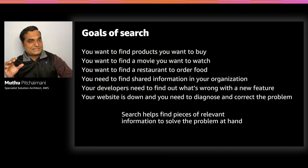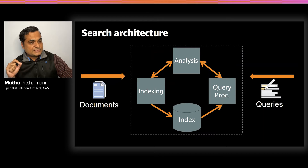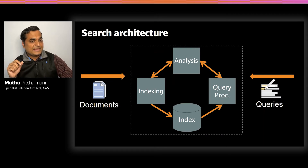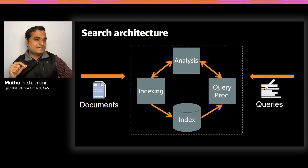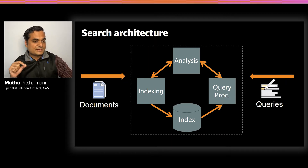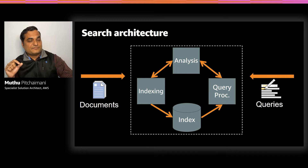Broadly, the architecture of Elasticsearch search looks like this. The data to be searched comes in the form of what are called documents. Indexing is a process where Elasticsearch converts these documents into a searchable form called an index. Analysis is a process which makes all this searching possible. Broadly speaking, analysis involves breaking down these documents into tokens and then normalizing them before storing into the index. The important thing to see is that when a query comes in, it undergoes the exact same process of tokenization and normalization to find the documents you are searching for.